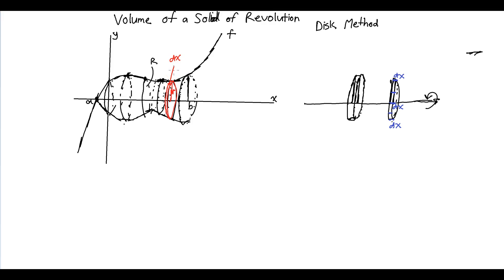And what is R? R is the distance from the x-axis to our graph. And you can define that distance as simply the y-coordinate, f of x. So if we had a point (x, f(x)), the y-coordinate is literally our radius.